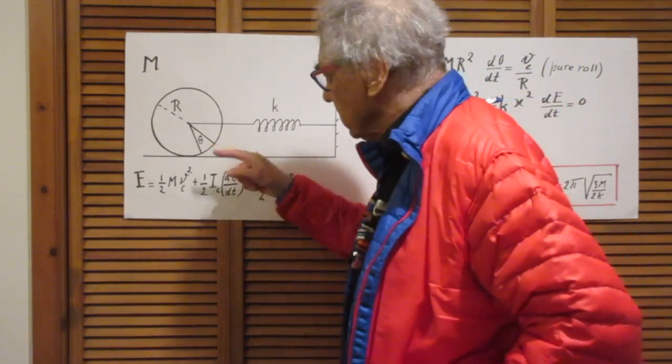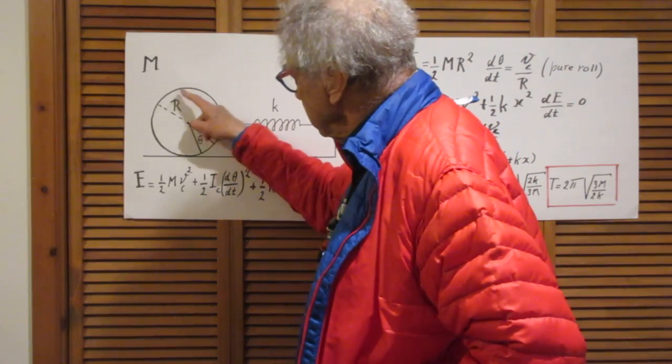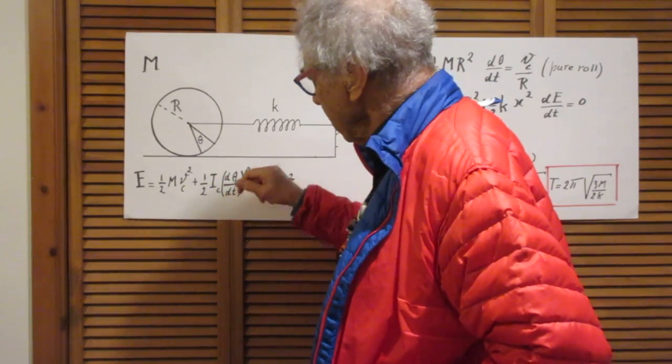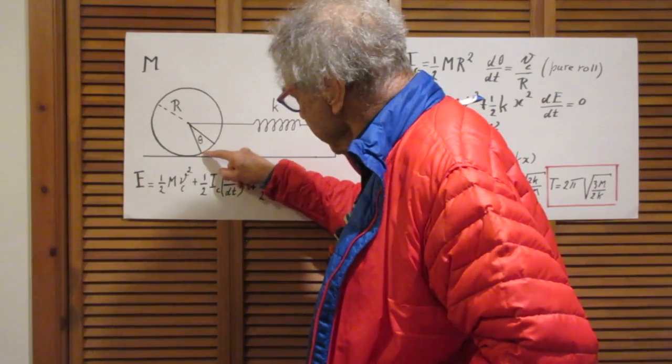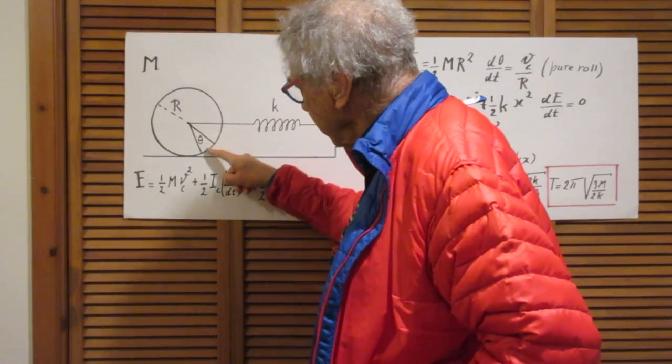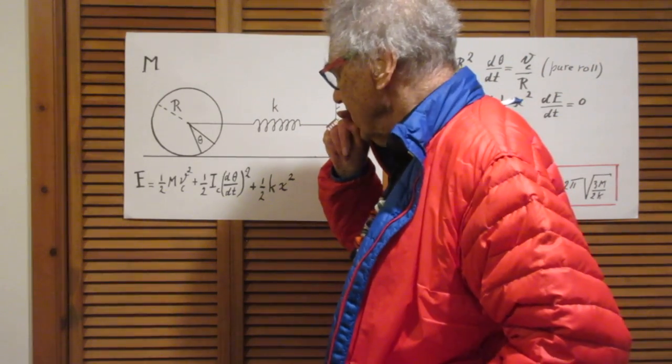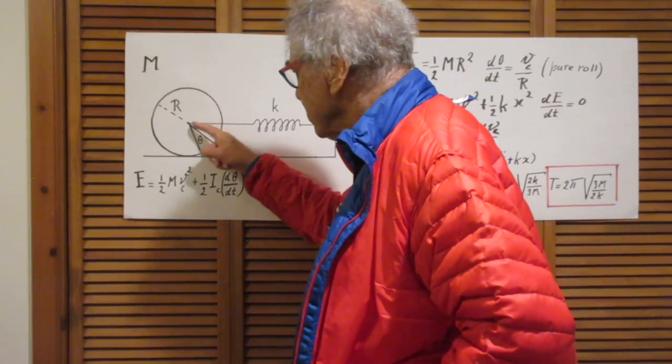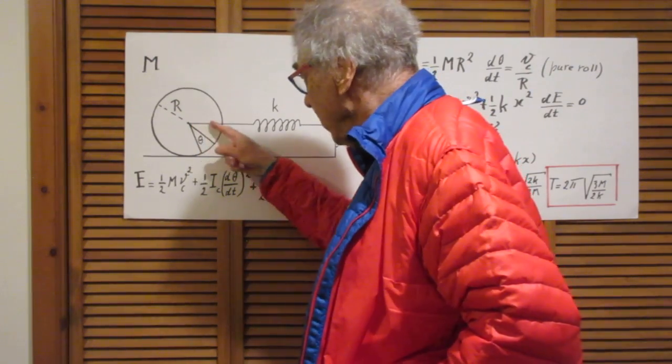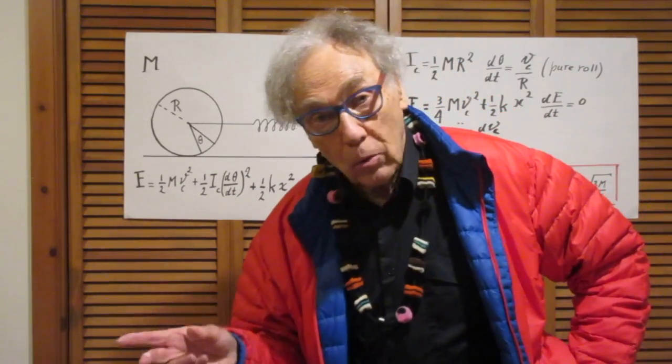Look at this picture. If this disc has rolled over an angle theta, then the length here is capital R times theta. That is the distance over which the center of mass moves in this direction or in that direction. Because that's because it's pure roll.